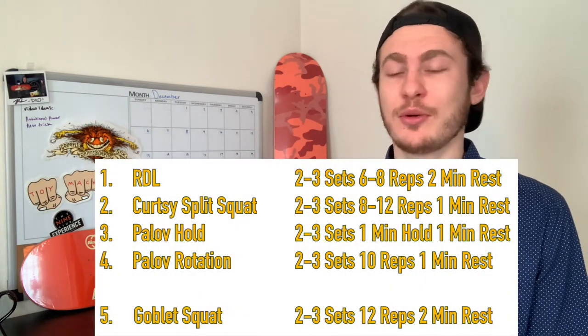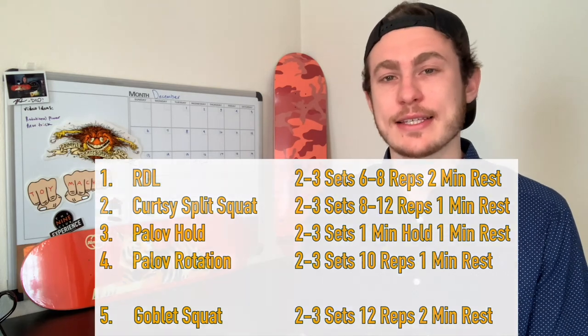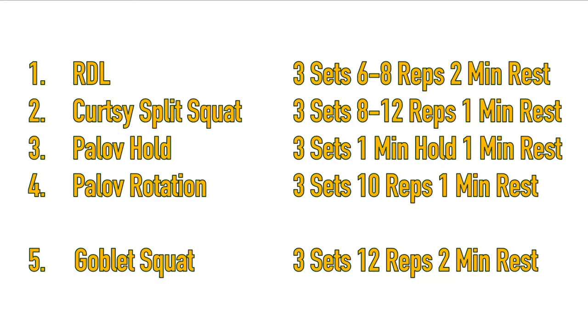Once you're confident with that routine, I would recommend adding in area number five — the anti-flexion exercise, which is the weighted goblet squat. Remember these exercises do require load, so it's going to be quite taxing on your body and you're probably going to get sore the next day. Soreness tells us we are making progress, growing, and getting stronger — however it will affect your skateboarding, so take adequate rest and make sure you're not extremely sore before you go skating. For the goblet squat, perform three sets with twelve reps and about a two-minute rest in between. Those are my top five fundamental movement patterns for skateboarders — thanks for watching, and I'll see you later on Skate Athletics.